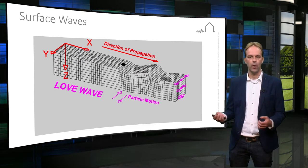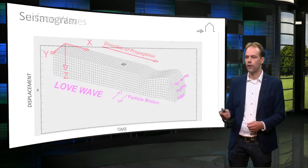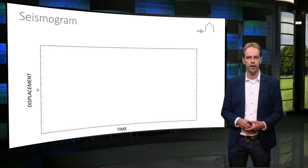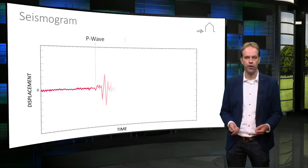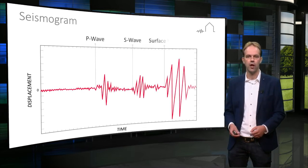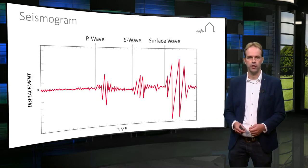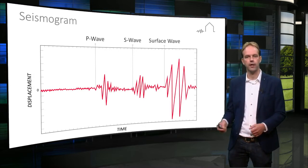The arrival of these waves generated by an earthquake are recorded by a seismogram on a seismograph. Typically the p-waves arrive first because they travel the fastest, followed by the s-waves and then the slowest surface waves. But these surface waves have by far the largest amplitude.